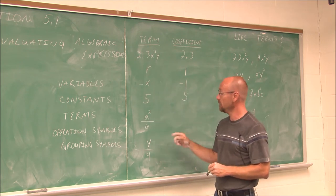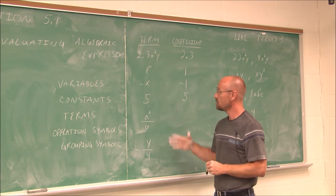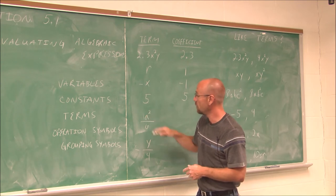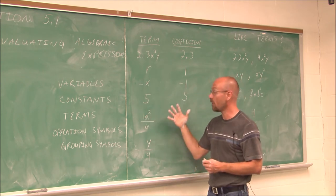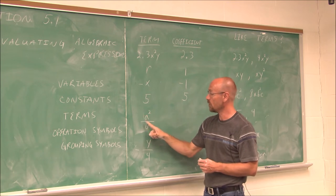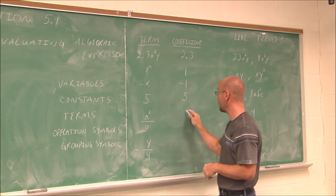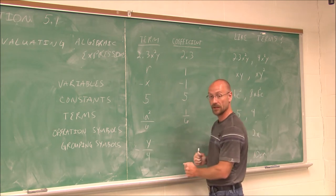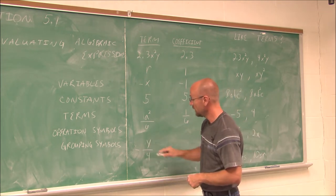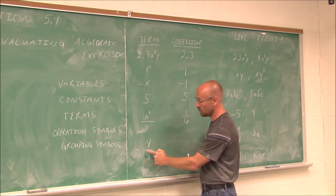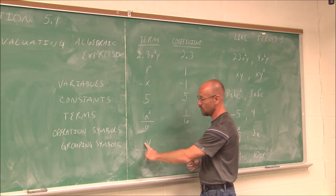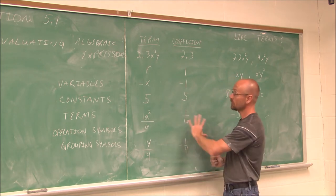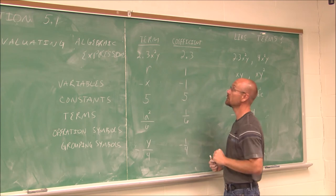These can be tricky when we have division. But we can think of it the same way — there is a 1 in front. We look at all the numbers of the term: we have 1 over 6, which is a rational number — one sixth. Same thing with a negative: we can imagine a 1 there, making it negative 1 over 4, or negative one fourth. So hopefully we're comfortable with determining coefficients.